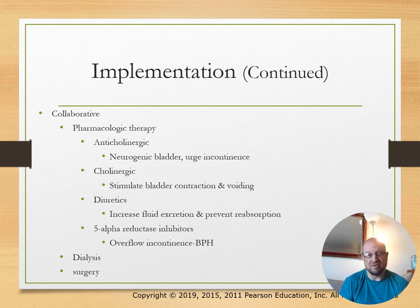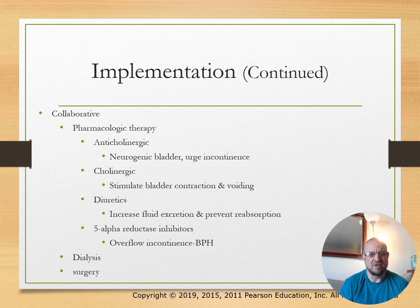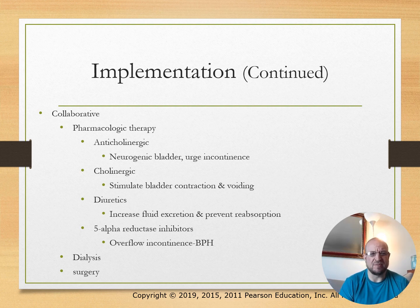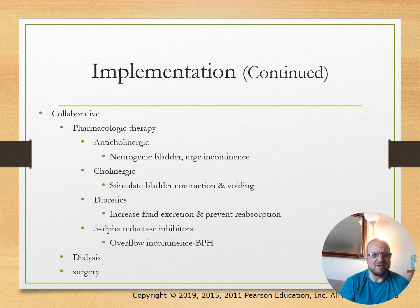We want to be collaborative. Pharmacological therapies include anticholinergics for neurological bladder and urge incontinence, cholinergics to stimulate bladder contraction and voiding, diuretics to increase fluid excretion and prevent reabsorption, and five alpha-reductase inhibitors. Additional options include dialysis and surgery.